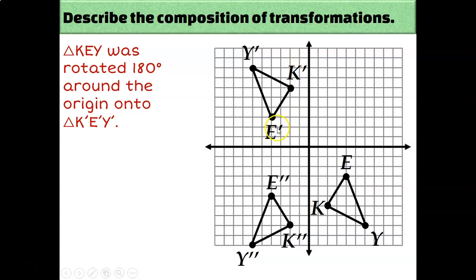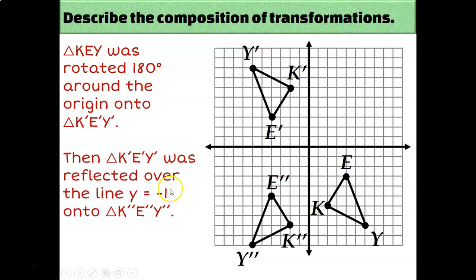Then from triangle K'E'Y' to triangle K''E''Y'', we reflect it. This triangle is just the upside-down version of this triangle. It's tempting to assume it's the axis you reflect over, but always be sure to count because sometimes it's a different line instead — and that's what we have this time. The distance from E' to E'' is 8 units, and half of 8 is 4. The line of reflection has to be halfway between E' and E'', so 4 units away from E' is negative 1, and 4 units away from E'' is also negative 1. So y equals negative 1 must be the line of reflection.